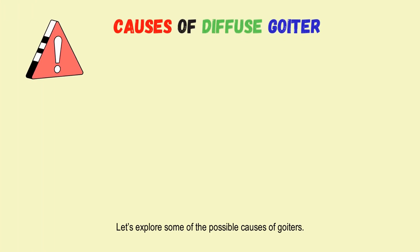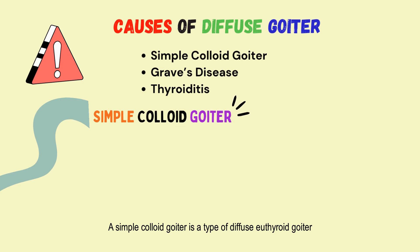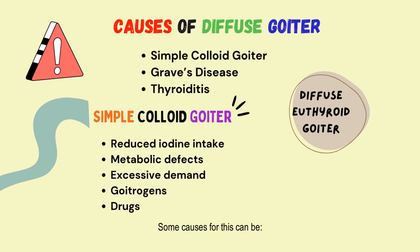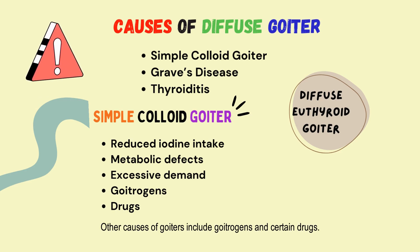Let's explore some of the possible causes of goiters. For diffuse goiters, the causes can include conditions like simple colloid goiter, Graves' disease, and thyroiditis. A simple colloid goiter is a type of diffuse euthyroid goiter where the thyroid enlarges to maintain normal levels of thyroid hormones. Some causes for this can be reduced iodine intake, though this is very rare today, metabolic defects like congenital defects in thyroxine synthesis, or excessive demand such as during puberty, pregnancy, or lactation.